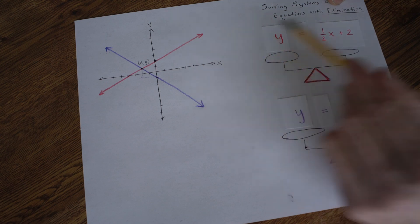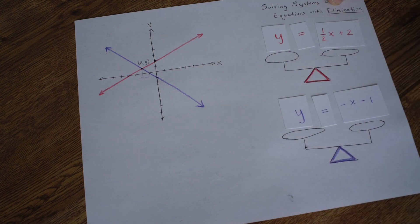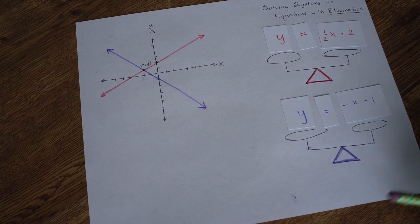And so we adjusted the top equation so that when we added, something was eliminated. Either x's was eliminated, or y's were eliminated.